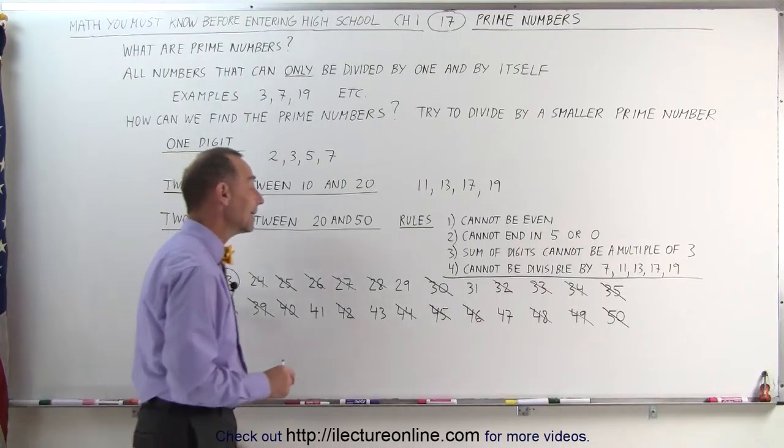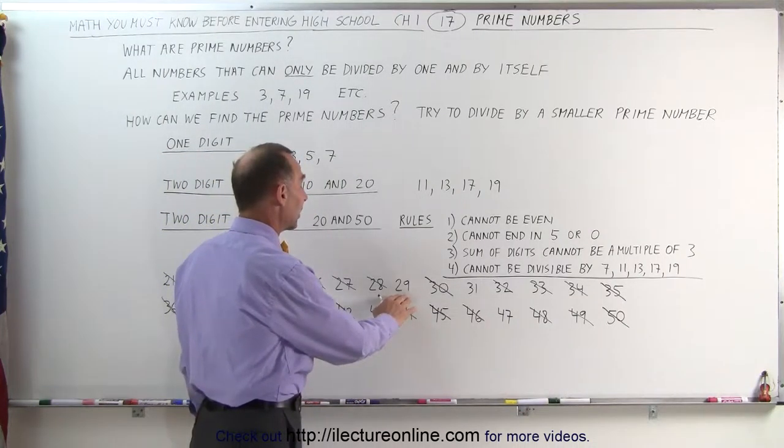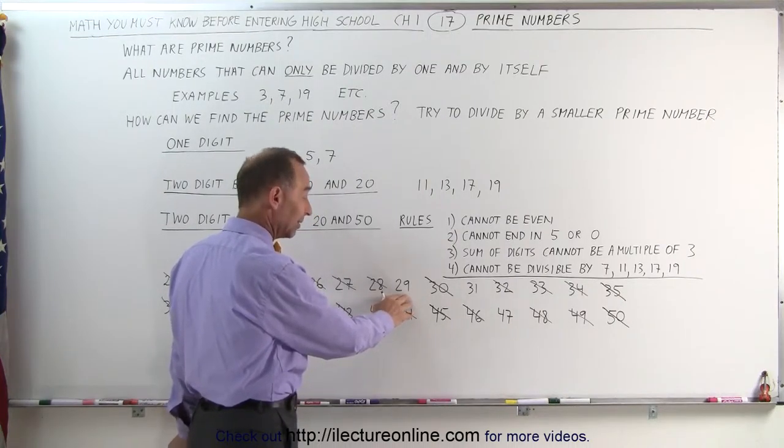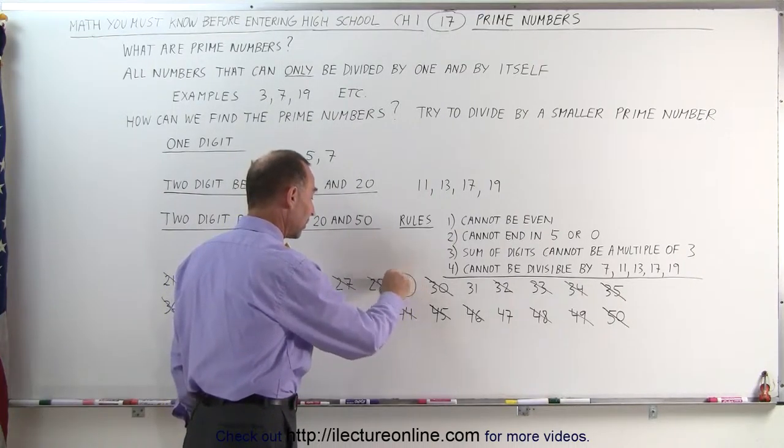Next, the number 29. Again, it cannot be divided by 2, 3, 4, 5, 6, 7, 8, 9, 10, 11. It's starting to look like a prime number. There's another one.